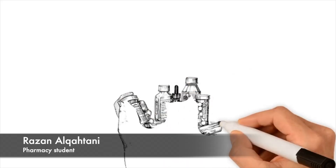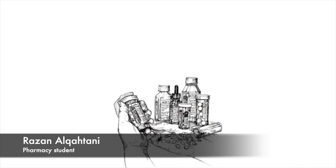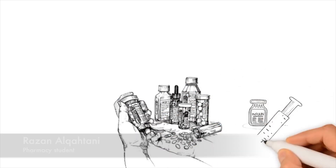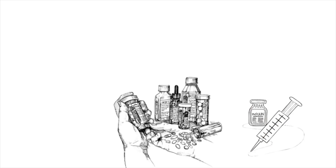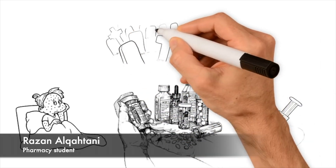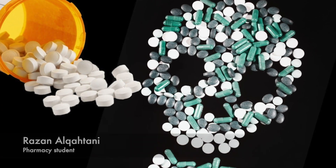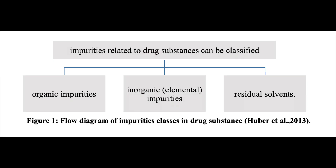Hello everyone. First of all, genotoxicity is a broad term that refers to any deleterious change in the genetic material, regardless of the mechanism by which the change is induced. A potential genotoxic impurity has been defined as an impurity that shows a structural alert for genotoxicity but has not been tested in experimental test models.